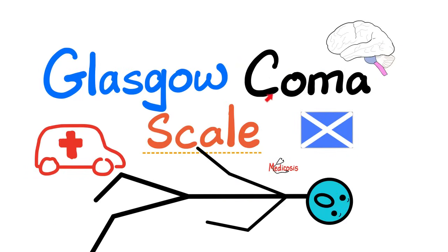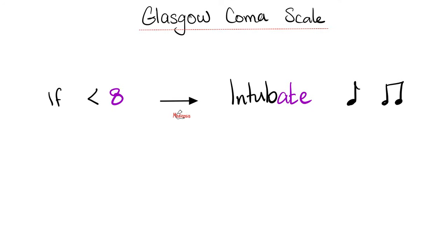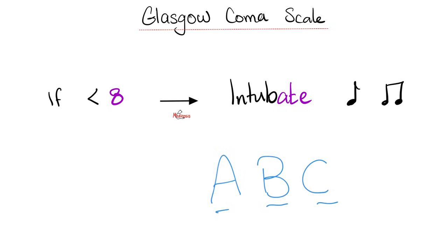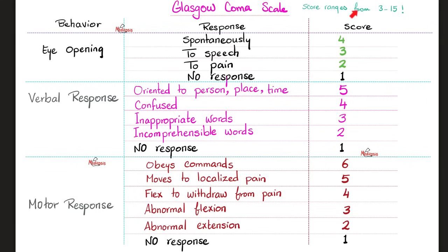On to the Glasgow Coma Scale to assess the level of consciousness. Just remember: if the total score is less than 8, it's time to intubate — it's all about your ABCs. The Glasgow Coma Scale depends on three components: eye-opening response, verbal response, and motor response.